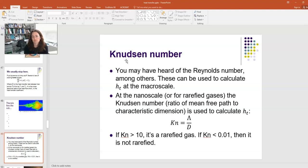So, that Knudsen number, Kn, is equal to lambda over D, where lambda is the mean free path, and D is the characteristic dimension of your nanoparticle. Now, if the Knudsen number is greater than 10, it's considered a rarefied gas, and if the Knudsen number is less than 0.01, then it's considered not rarefied. And then there's regimes in the middle where you have to kind of scratch your head and figure out what you're doing.